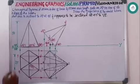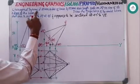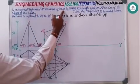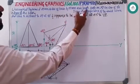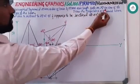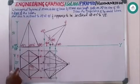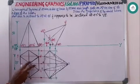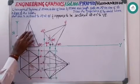Coming to the next problem, a hexagonal pyramid with 25 mm sides of base and 50 mm axis length rests on HP on one of its edges. I have drawn this hexagonal pyramid top view as well as front view for the given height, taking a reference CD.